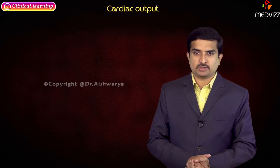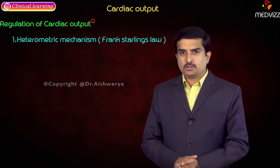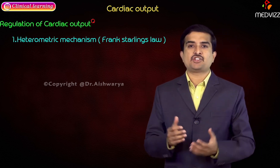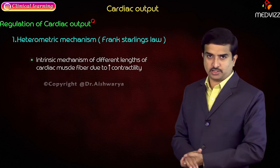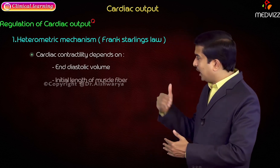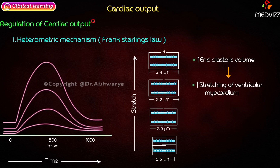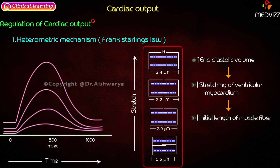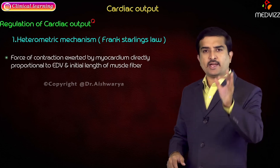There are various mechanisms regulating cardiac output. The first is the heterometric mechanism, which is Frank-Starling's law — an intrinsic mechanism based on different lengths of cardiac muscle fibers. Cardiac contractility mainly depends on end-diastolic volume (EDV) and initial length of the muscle fiber. If EDV is more, stretching of the ventricular myocardium is more, increasing the initial length of the muscle fiber. According to Frank-Starling's law, force of contraction is directly proportional to EDV and initial length of the muscle fiber.